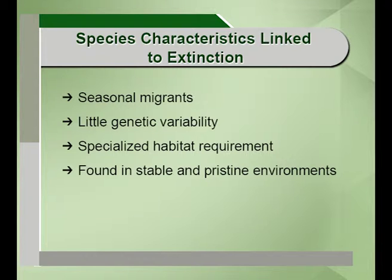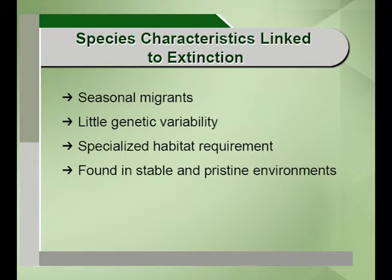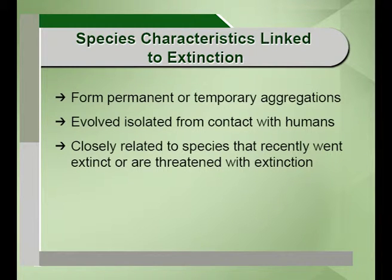Species with specialized habitat requirements — for example, in wetlands, there are species which can survive only in that particular habitat, with specific salinity or chemical constituents. If there is a change in habitat and they cannot adapt, they will be more prone to extinction. Species found in stable and pristine environments are not used to any human disturbance, and if they are suddenly exposed to other species or a changing environment, there is more risk of them being lost. Species that form aggregations, whether temporary or permanent — if this aggregation is disrupted, there are chances of them becoming extinct.